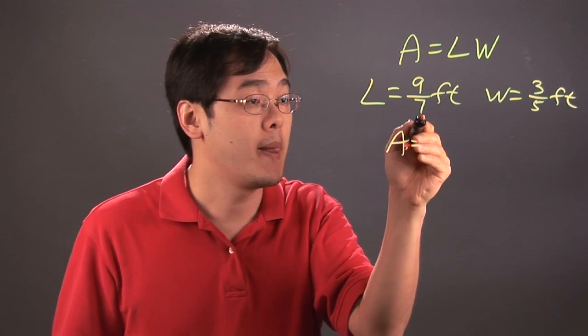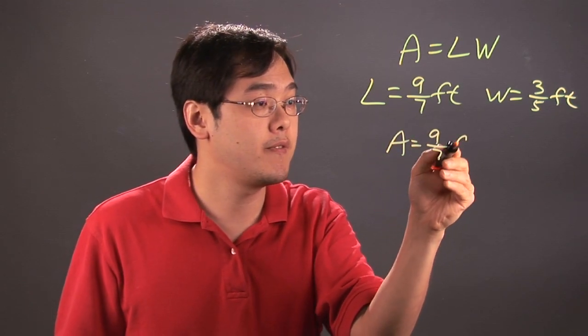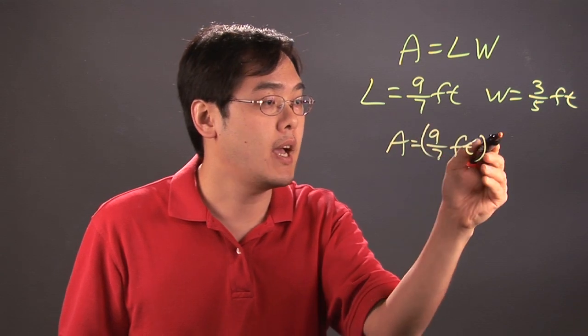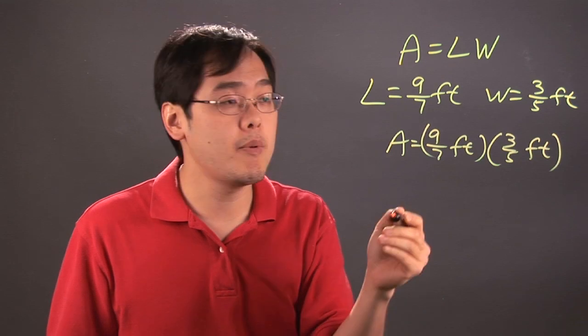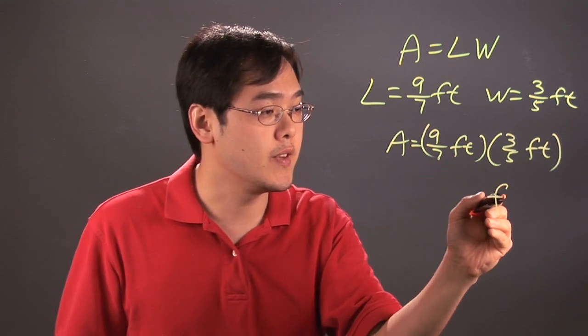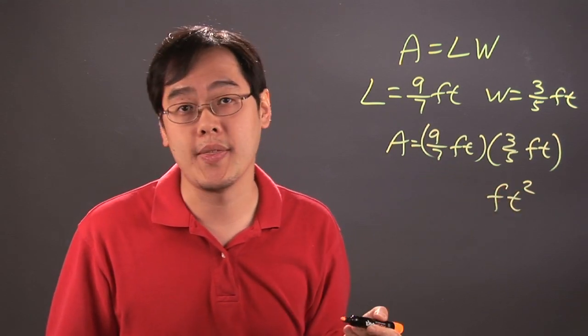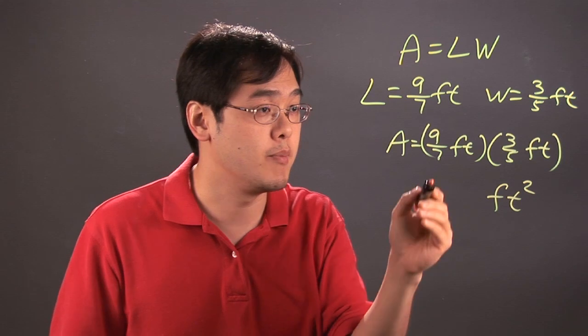So you have area equals nine-sevenths feet times three-fifths feet. Now keep in mind that feet times feet is feet squared or square feet. That's how you write that, and then you multiply the fractions as they belong.